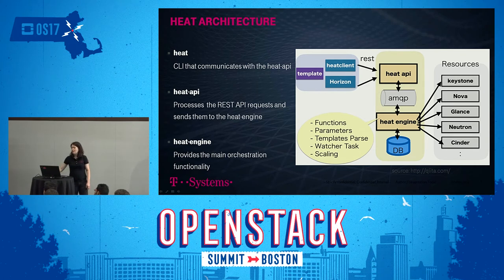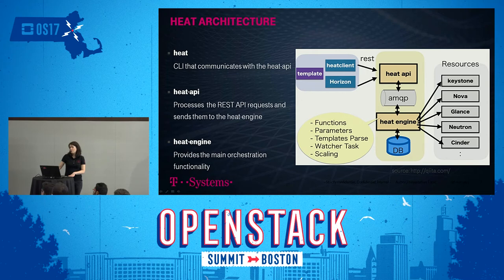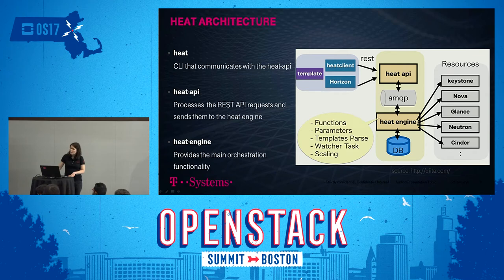I was looking around to find a nice picture of how the HEAT architecture looks like, and I thought this is an easy, not-so-complicated one. It's basically a different view from what we saw on the first slide. You have your template, you have an API or a dashboard where you have your REST calls, and then this is queued to the HEAT engine. The HEAT engine is the heart of it all — it knows the functions, how to treat the parameters, and how to parse the templates. The HEAT engine is the one talking to all the other projects like Keystone and Nova. So this is the main orchestration component doing all the work.